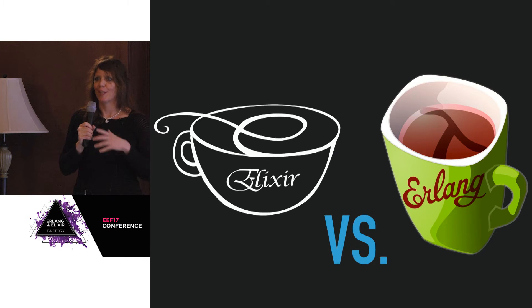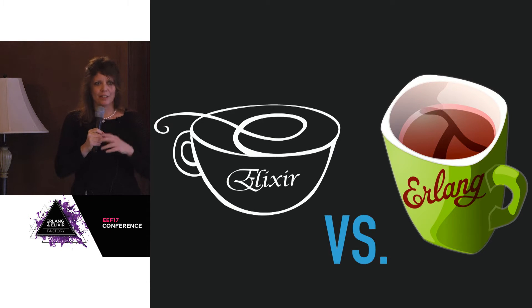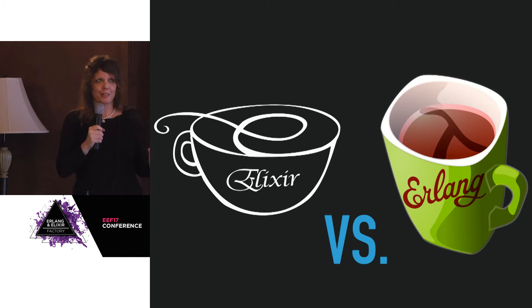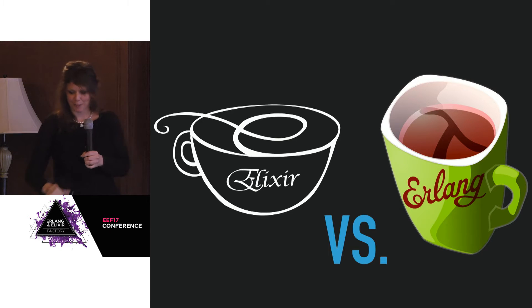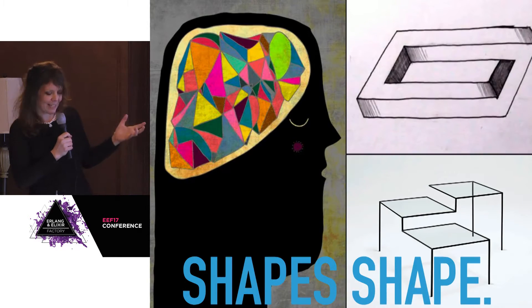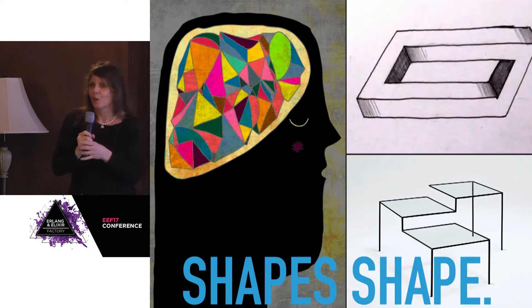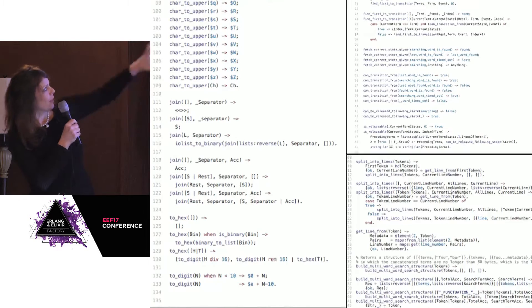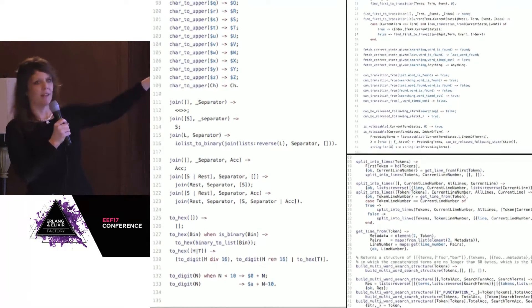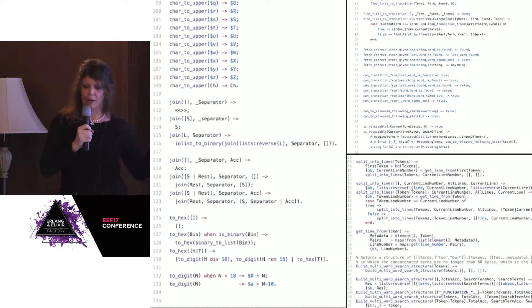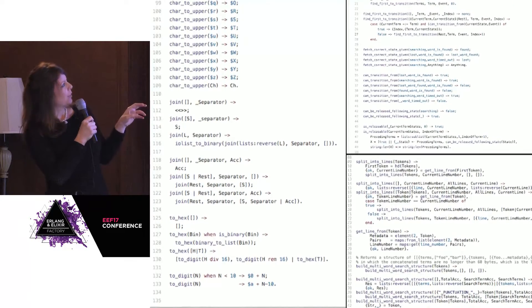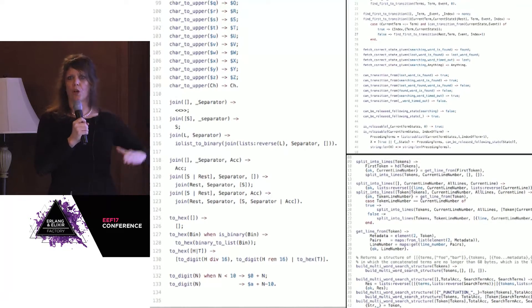I wanted to dive into these new and different shapes and see how they affected my thinking. So before we get to what the code did, I just wanted to look at the shapes of it. Here are three Erlang files — some are mine, some aren't. The exercise I'd ask you to do is squint at it and just see what you see by the shapes of the words on the page.